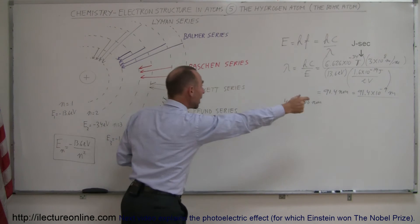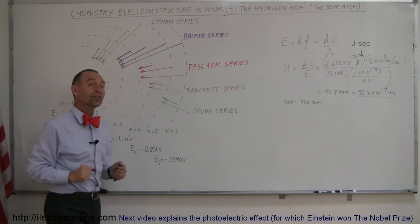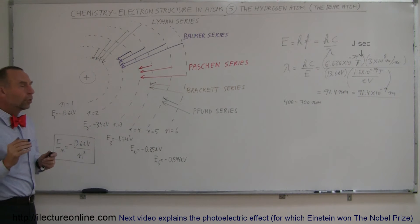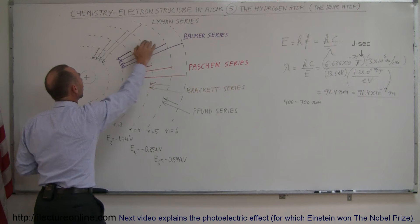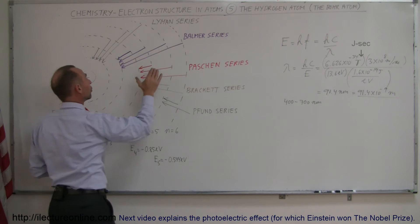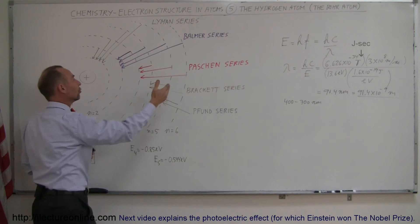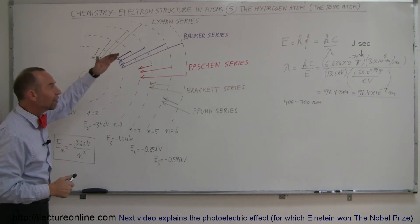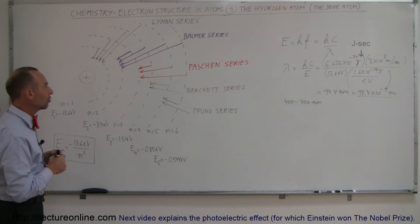When an electron comes from far away and jumps all the way down to the innermost energy level, a photon of exactly 13.6 electron volts — an ultraviolet photon — is emitted. The first person to discover the relationship for jumps to and from the innermost level was Lyman, so that series is called the Lyman series. Balmer figured out the energy differences for jumps down to the second level — the Balmer series — and Paschen worked out the jumps down to the third energy level, giving us the Paschen series.